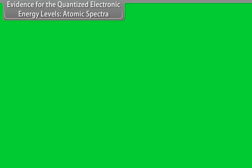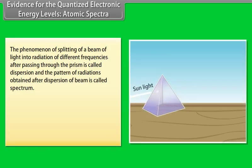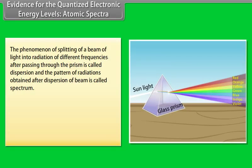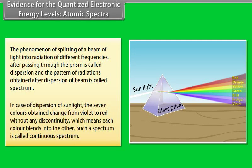Evidence for quantized energy levels — Atomic spectra: Dispersion is the splitting of a beam of light into radiation of different frequencies after passing through a prism; the resulting pattern is called a spectrum. In the case of sunlight, seven colors change from violet to red without discontinuity, each blending into the next — such a spectrum is called a continuous spectrum.